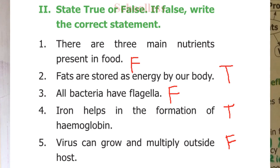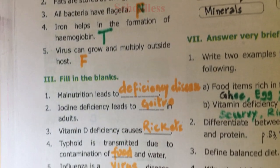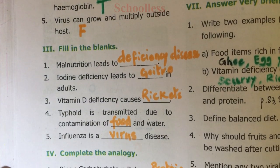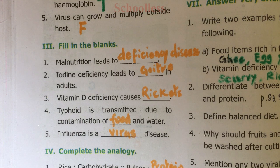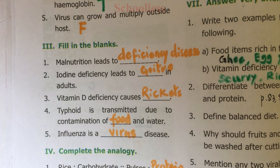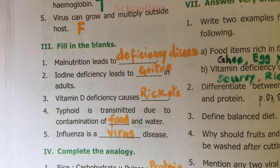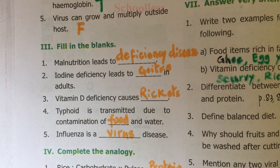Section Three: Fill in the blanks. Question One: Malnutrition leads to deficiency diseases. Question Two: Iodine deficiency leads to which disease in adults? Iodine deficiency leads to goiter in adults.